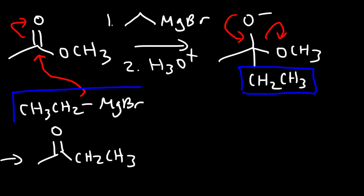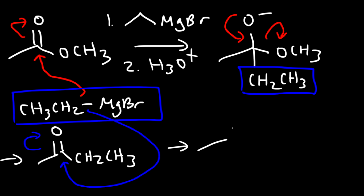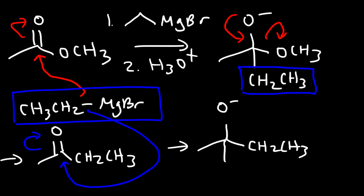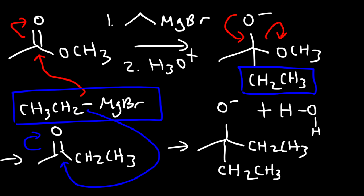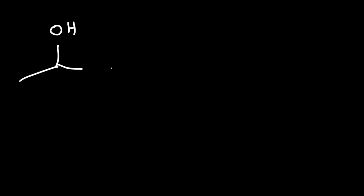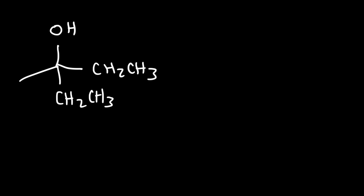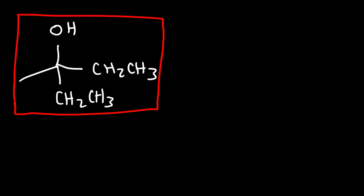The same Grignard reagent then reacts with the ketone intermediate, attacking the carbonyl carbon and giving an alkoxide ion — that's the second R group (CH₂CH₃). Reacting with H₃O⁺ in the last step turns this into a tertiary alcohol. This is the major product for the reaction. As you can see, the Grignard reagent reacts twice with the ester, adding two R groups to it.